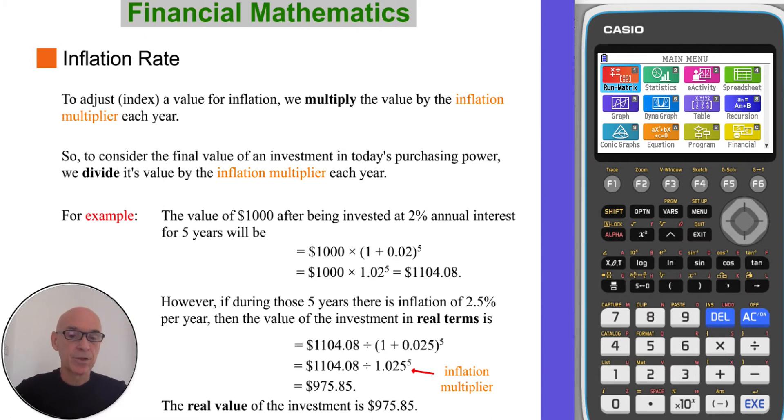However, if during those five years there has been an inflation rate of 2.5% per year, then the value of that investment in real terms is found by dividing that final value by the inflation multiplier raised to the power of five for five years. So the real value of the investment is $975.85, as shown in this calculation here.